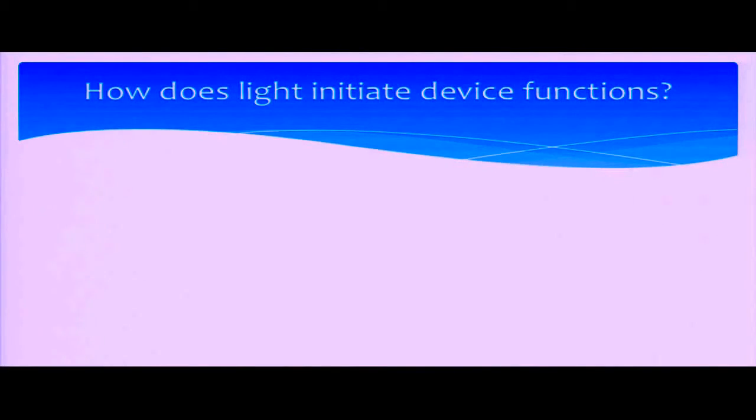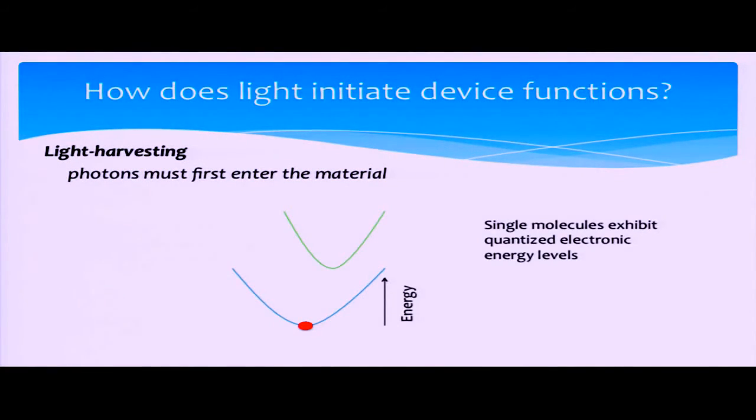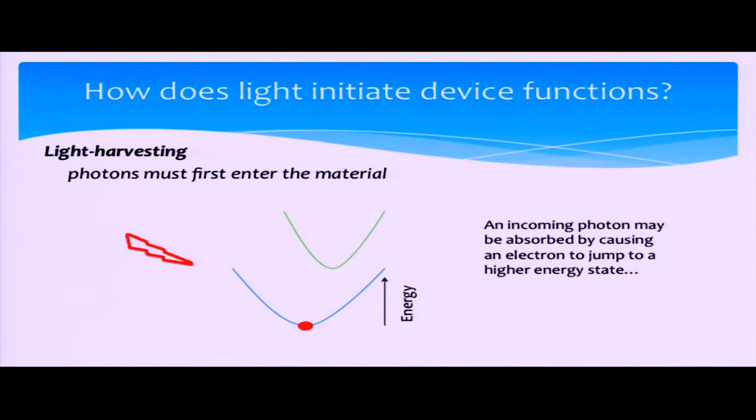So how can we use light in devices? The entry point is getting light into the device, and this is usually referred to as light harvesting. In molecular systems, we usually see discrete quantized energy levels. Here I've shown the ground and the first excited electronic state separated by a certain energy range.